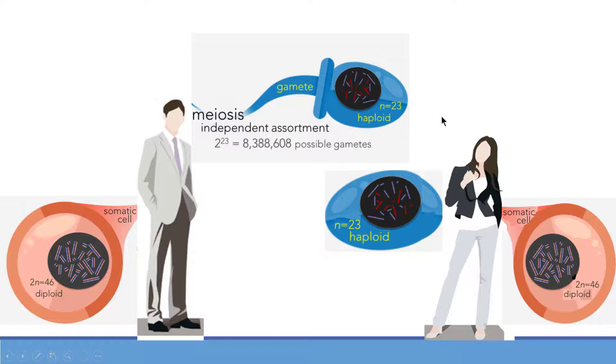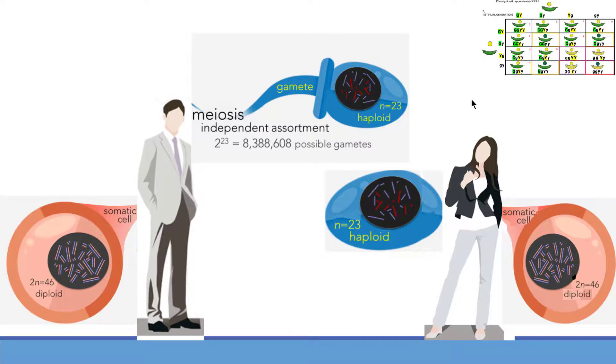So the possible type of gametes that can be made by humans are 8,388,608. And this phenomenon is quite similar to the law of independent assortment proposed by Gregor Mendel.